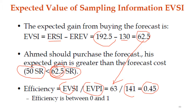Efficiency ranges between 0 and 1. If the efficiency value is close to 0 - for example 0.1 - it means low efficiency. If the value is close to 1 - for example 0.95 - it means 95% efficiency, representing high efficiency. More efficiency means the ERSI value is larger relative to EVPI.